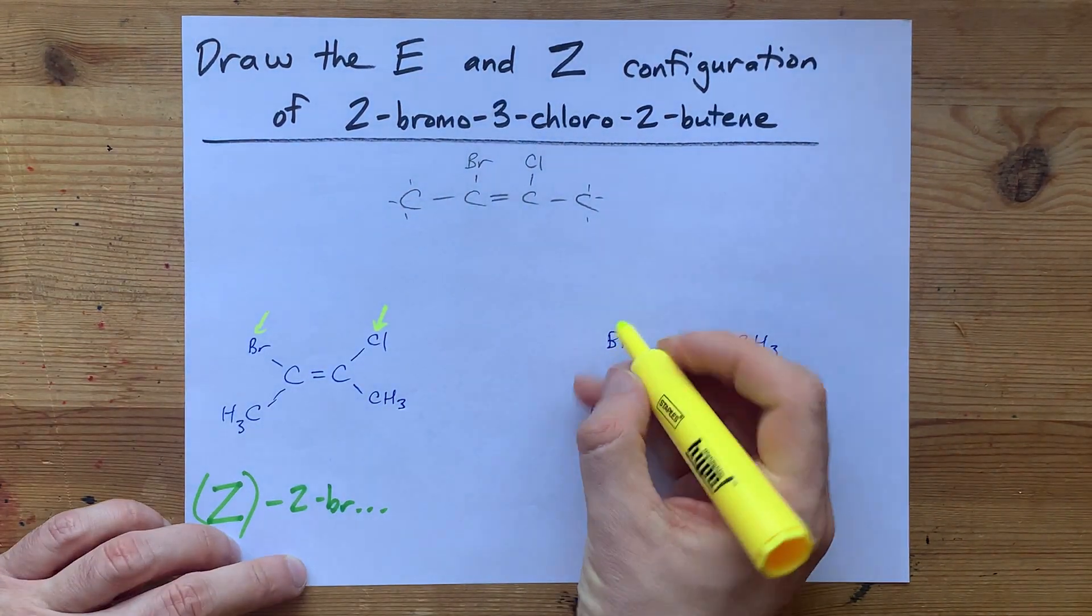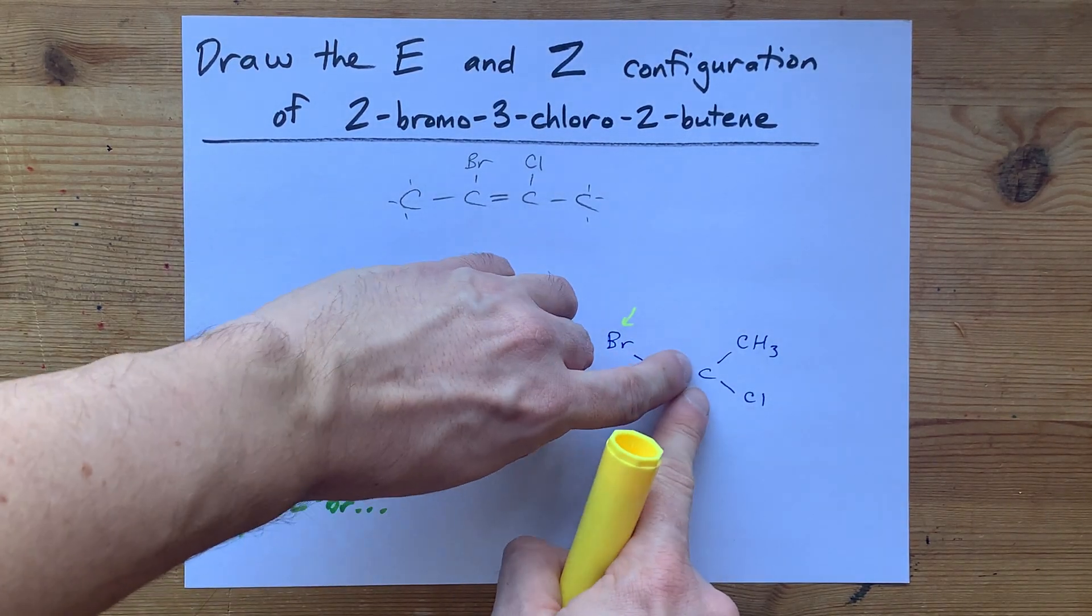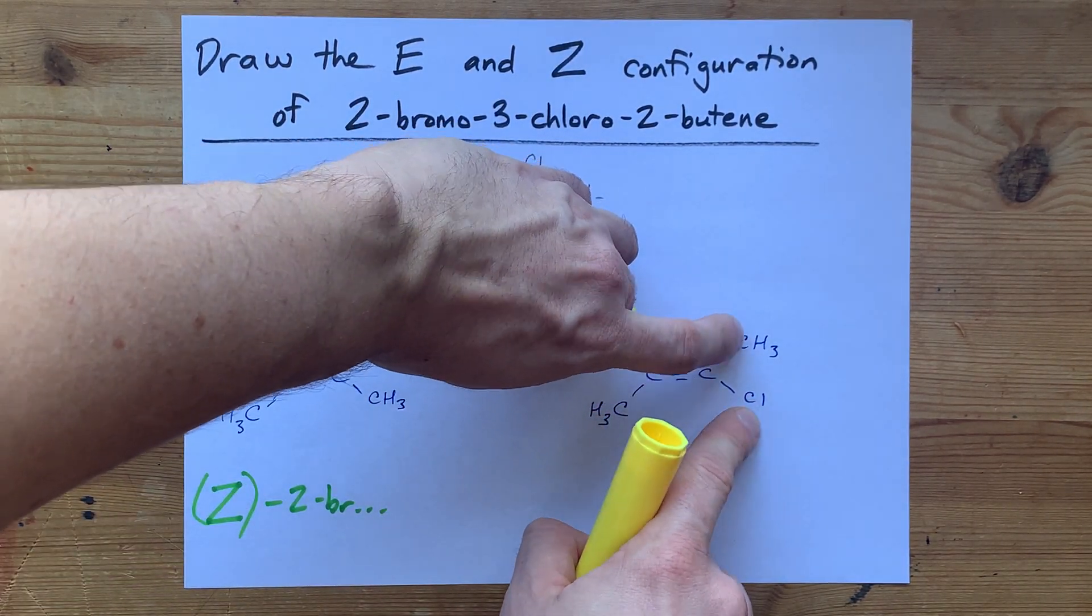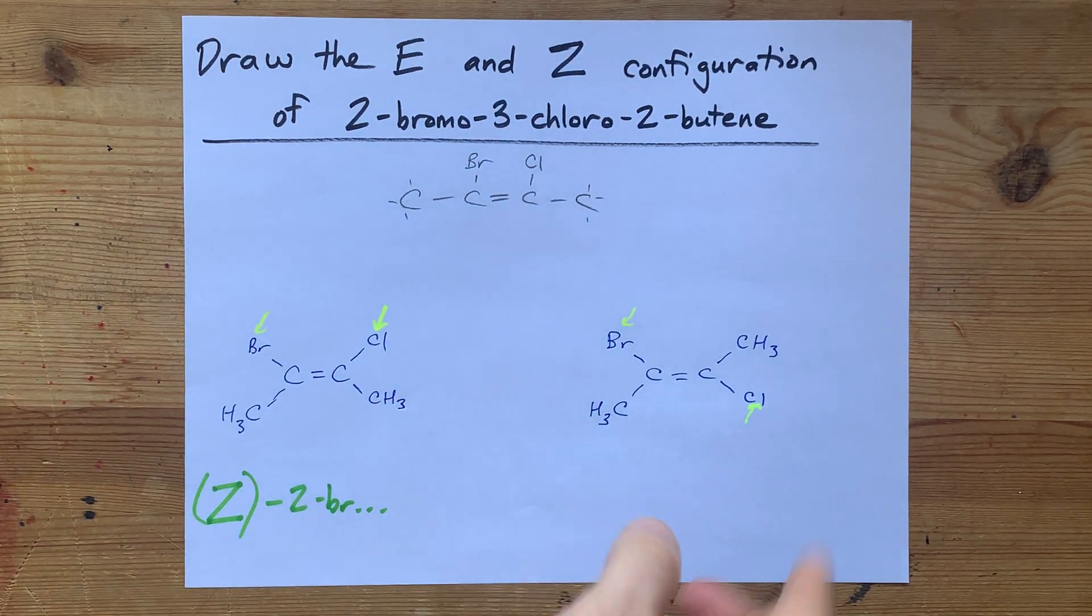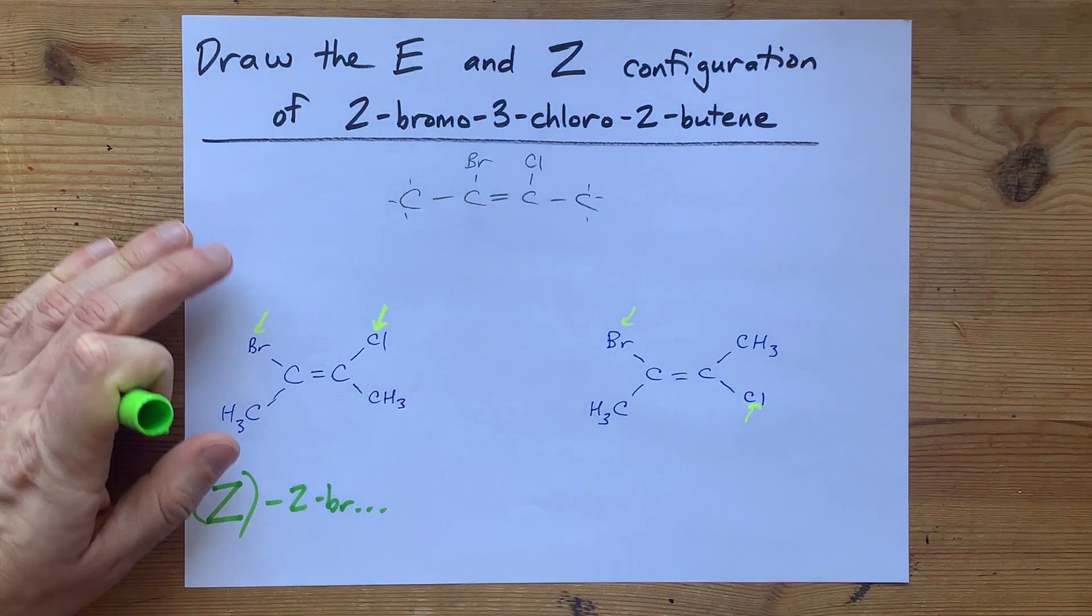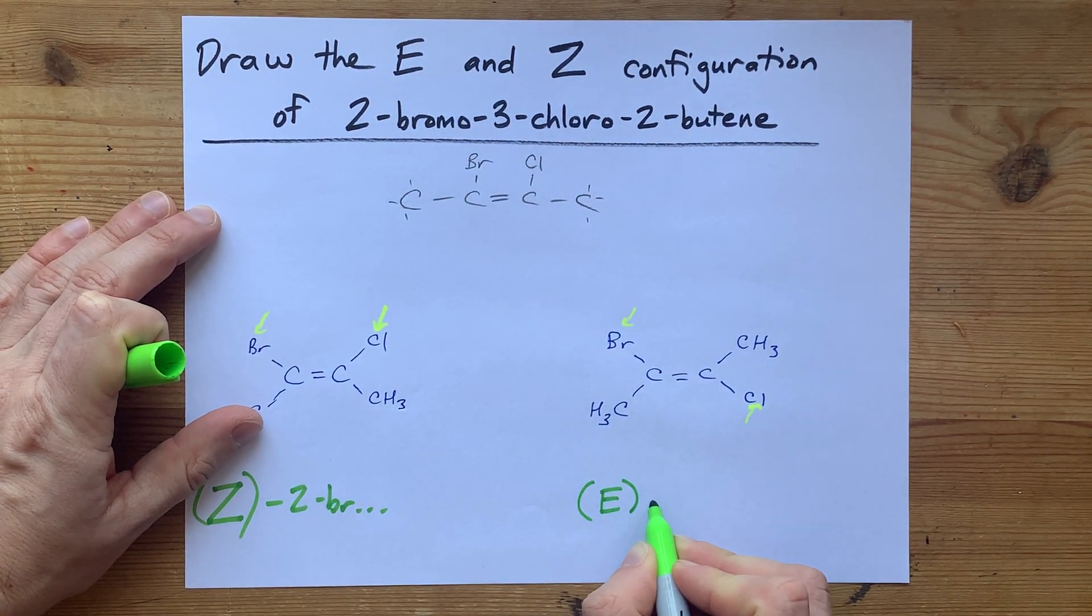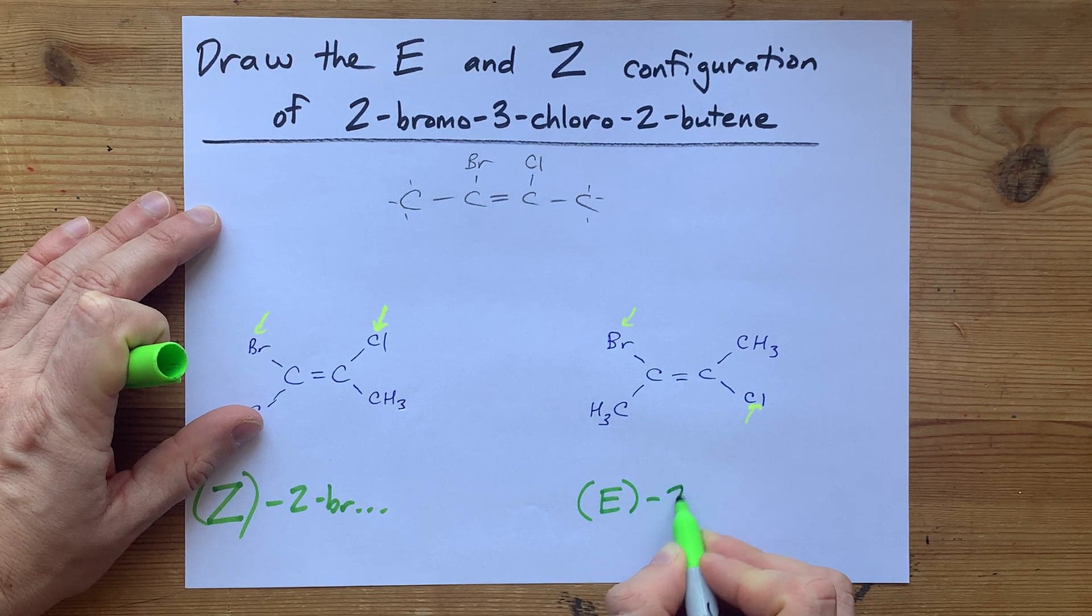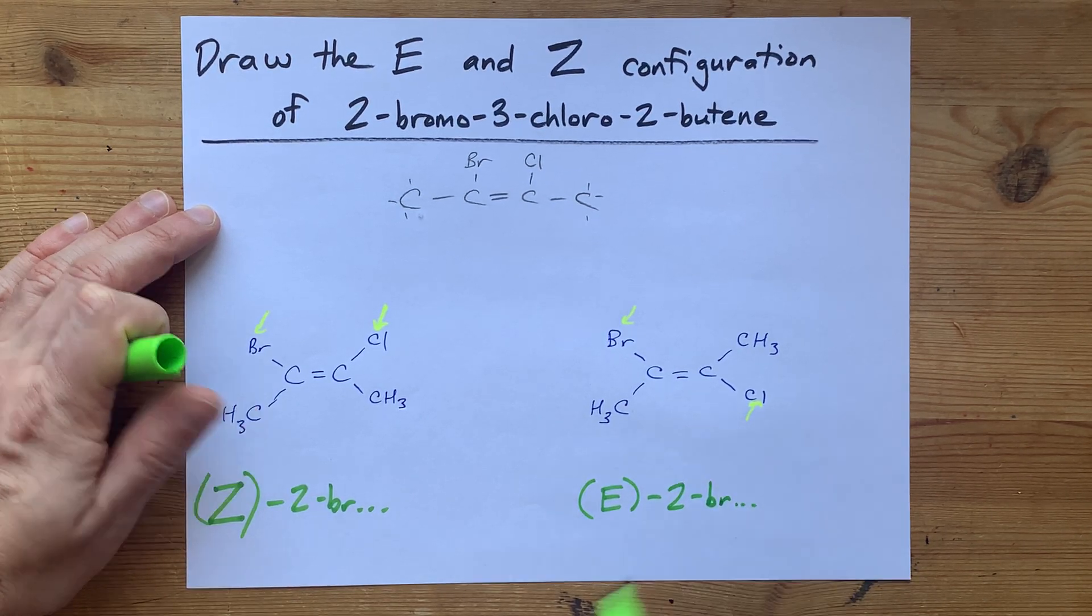And we'll do it over here. From this carbon, we branch. Bromine has the higher atomic mass of bromine versus carbon. And at the other branch point, chlorine versus carbon, chlorine has it. If the two higher priority groups are on opposite sides of the horizontal axis of the double bond, you got yourself the E isomer. So you call it E-2-bromo-3-chloro-2-butene or whatever.